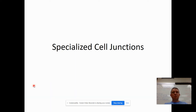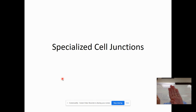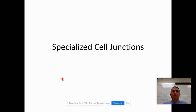Today we are talking about specialized cell junctions. This refers to various situations where you have two cells that are side by side such that they are making contact — the outer surface of the two cells is actually touching. There are four different types of junctions that we're going to discuss today. They each have their own unique characteristics, they serve different purposes, and they're found in different types of tissue.